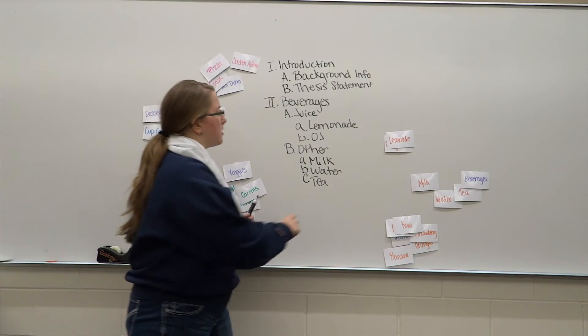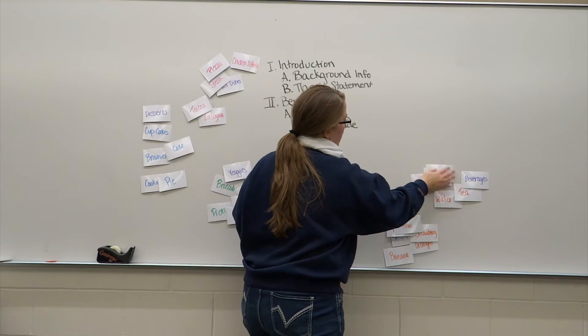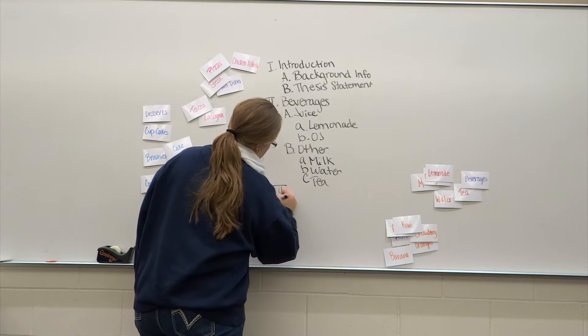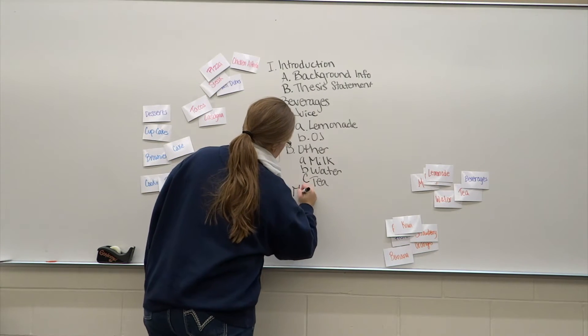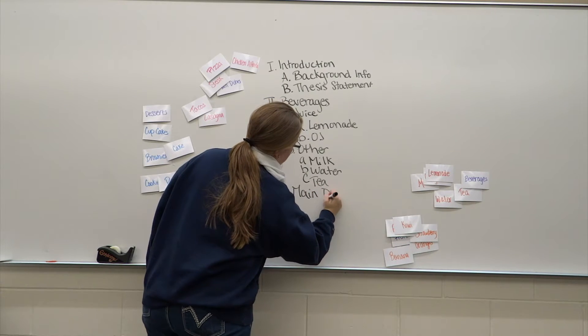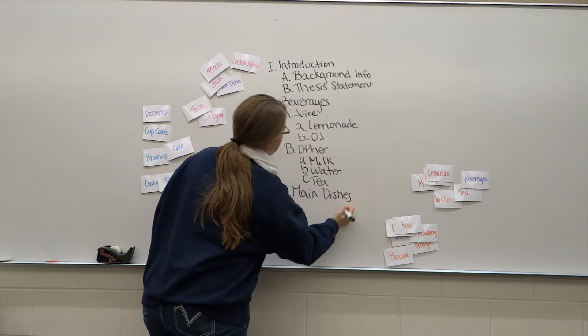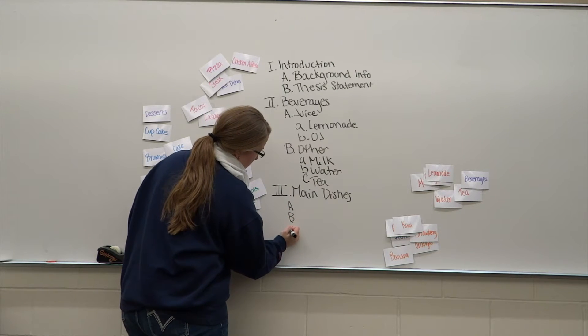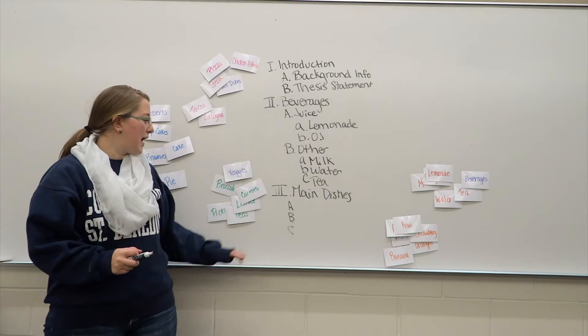After beverages, what do you think should go next in my paper? So I'll do Roman numeral three, main dishes, again capital letters A, B, C, so on and so forth.